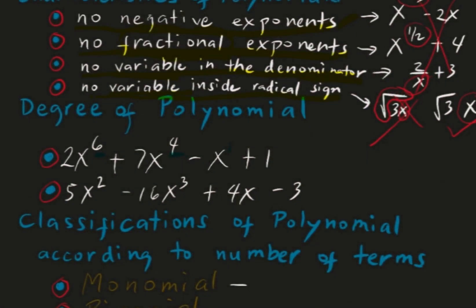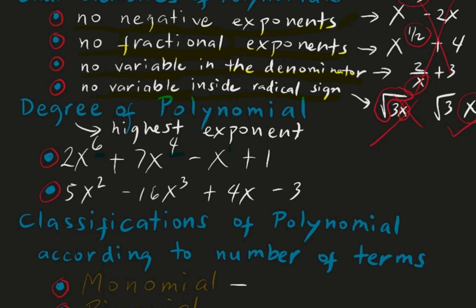Let's proceed to the degree of a polynomial. The degree is simply the highest exponent. For example, for the first one, what is the highest exponent? We have 6. Therefore, the degree of this polynomial is degree 6.